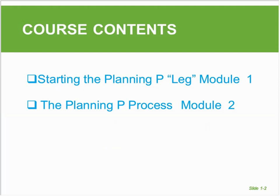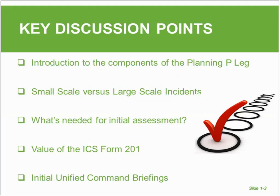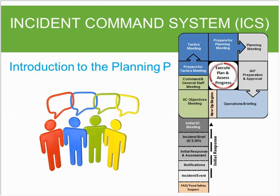There are two modules to this course. Today we will go through Module 1, and at a future date Liz will be sending out an announcement for a future webinar where we will continue the planning process for Module 2. Today, some of the key discussion points are the components of the Planning P — mainly the leg of the P — small-scale versus large-scale incidents, what's needed for initial response and assessment, the value of the ICS Form 201, and initial unified command briefings. CDFA and USDA use the Incident Command System to manage animal health emergency responses, and I'm hoping most of you have already taken the FEMA online courses called ICS 100 and 200, which really provides the basics for what this training is all about.